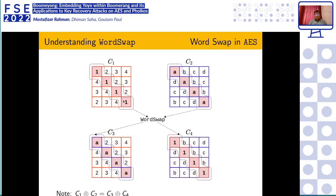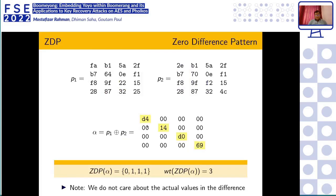The word-swap operation works as follows: consider two AES states where the bytes in each diagonal are grouped together. Interchanging the diagonals between the two ciphertexts is called the word-swap operation. For the zero-difference pattern, we take two AES states, compute their difference, and construct a pattern based on their diagonals. If one diagonal has active bytes it is considered active (denoted 0) while all other diagonals are inactive (denoted 1), so the weight of this zero-difference pattern is three.